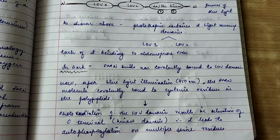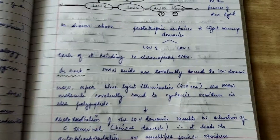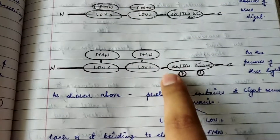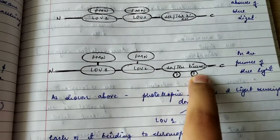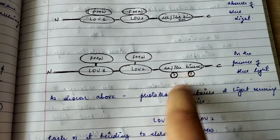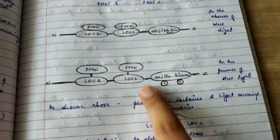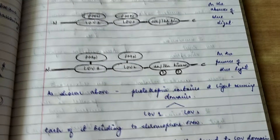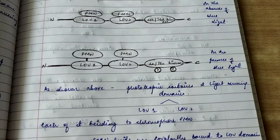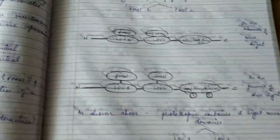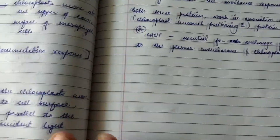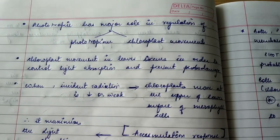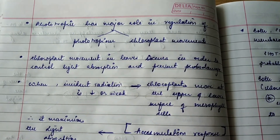The activation of the C-terminal domain leads to autophosphorylation on multiple serine residues. In autophosphorylation, a phosphate group comes and attaches, which is why this process is called autophosphorylation of multiple serine residues.